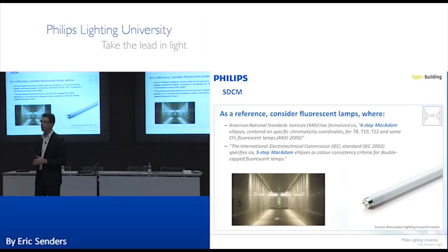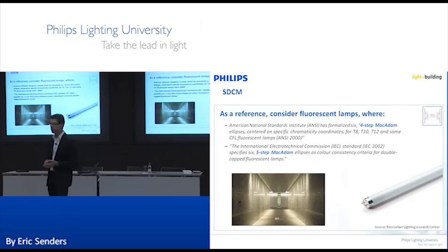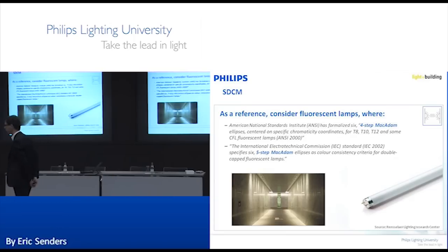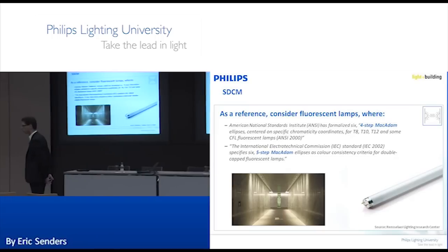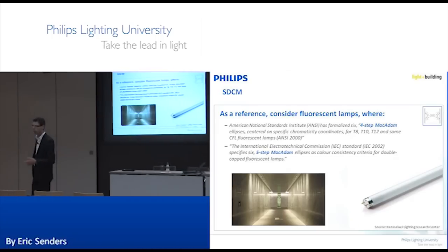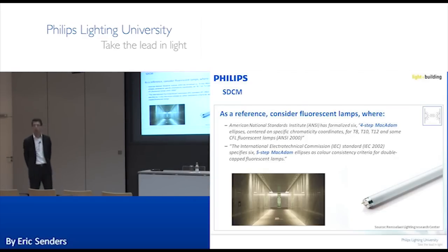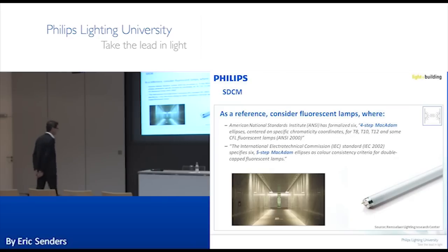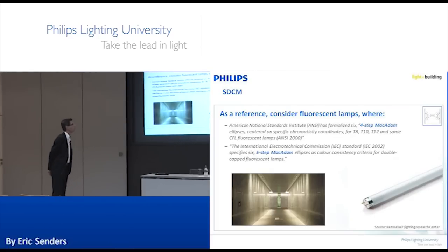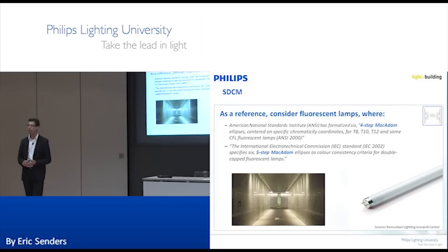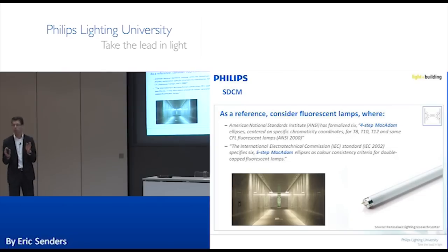If you consider this relative to traditional lighting, it's always interesting. The ANSI standard in the US has a four MacAdam maximum difference between one fluorescent tube and another. So if you're in the LED industry at three MacAdam, you're already better than fluorescent. The IEC international standard even allows five MacAdam for all fluorescent light sources.